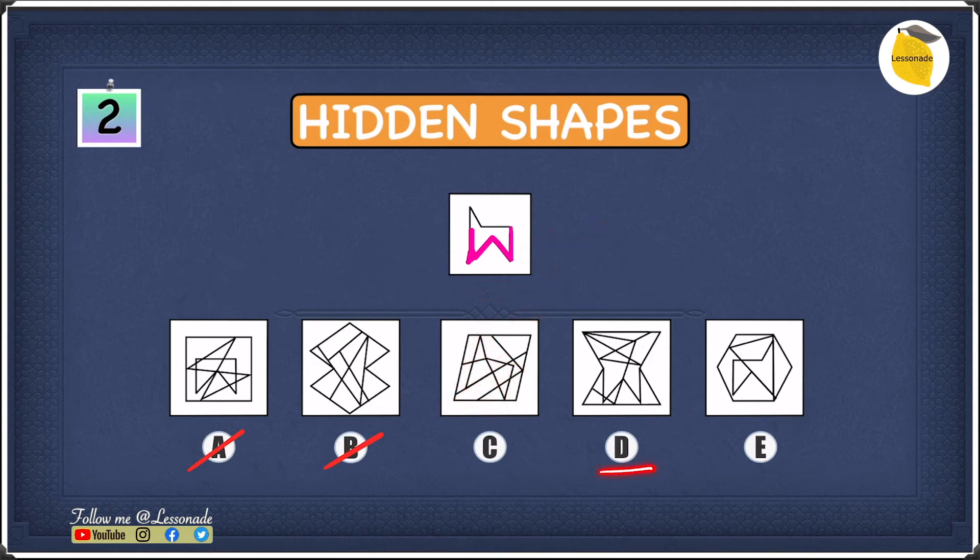But let's check D and E just to be sure that C is our answer. So let's start with D. In D we have another W shape, we can see one right here, but if you notice the W shape goes like this. If you go your way upwards, this shape is nothing like the one we have at the top, so therefore we can also cross off D.